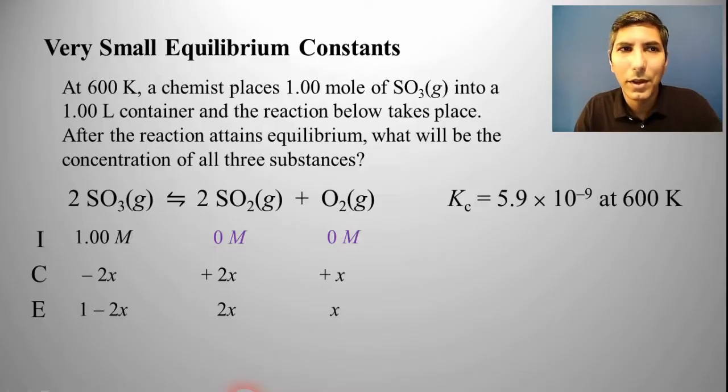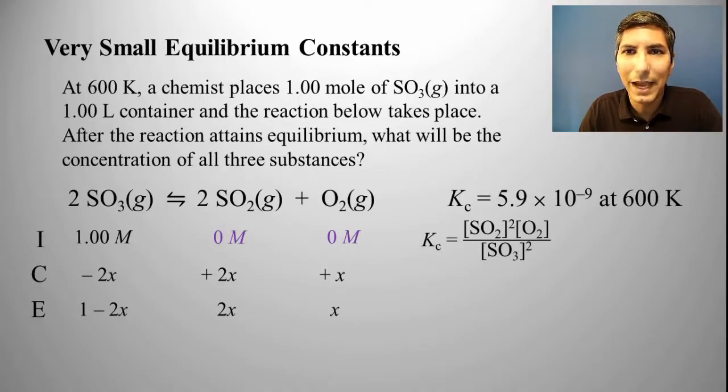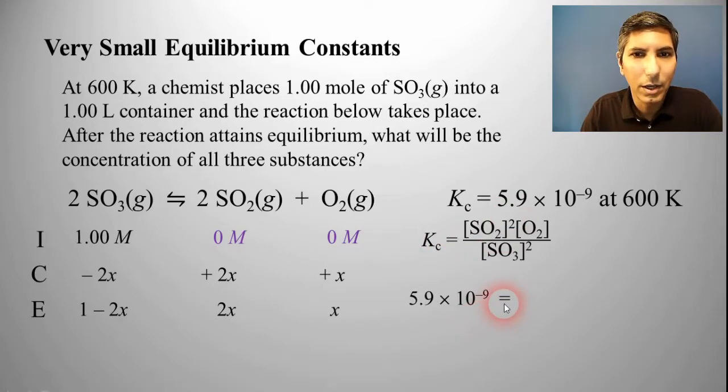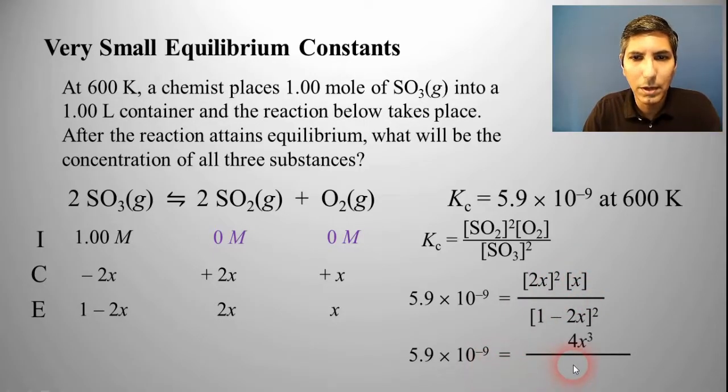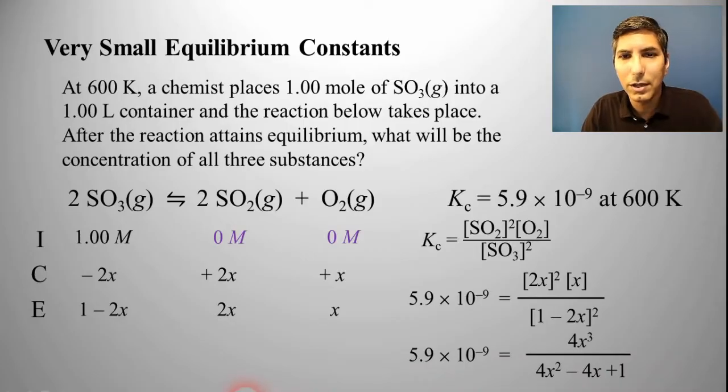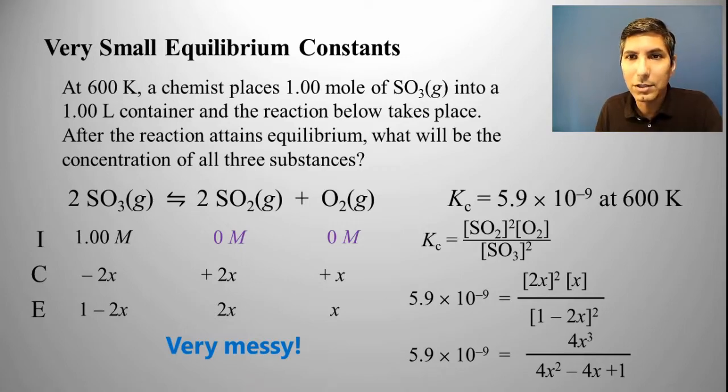This is the point where we're going to plug these values into our equilibrium constant expression, which looks something like this: products over reactants raised to the power of the coefficients. We're going to plug and chug into that equation. KC equals 5.9 times 10 to the negative 9th equals 2X quantity squared times X all over 1 minus 2X quantity squared. We know that 2X squared times X is actually 4X cubed. As you can see, we are starting to get a very messy algebra problem here. This is something that we like to avoid.